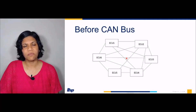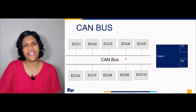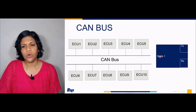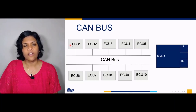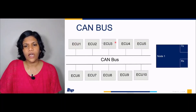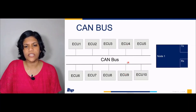I want you to pause the video here and think of a solution for this. Yes, CAN bus is a solution. CAN bus is a common communication medium through which messages are transmitted. Each ECU is called a node, and each node has a transmitter and a receiver. For example, if ECU1 wants to transmit its message, it will transmit through the CAN bus and all ECUs connected to this CAN bus will receive that message, including the one which transmitted it.